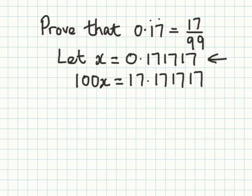If I multiply this decimal here by 100 I get 17.171717 and so on. Like I did last time I now say 100 take away 1. So 100x take away 1x gives me 99x.